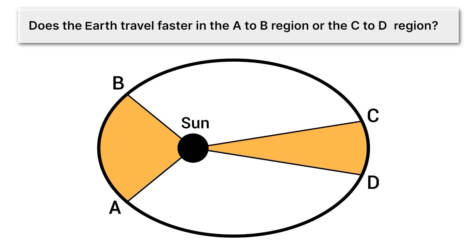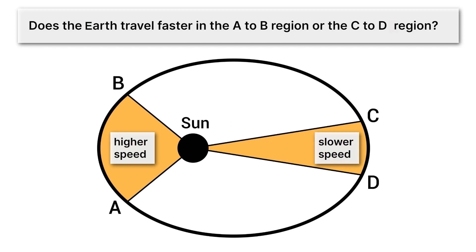Here's the question: does the Earth travel faster in the A to B region or the C to D region? You can see pretty clearly that the distance traveled from A to B is longer. If you travel a farther distance in the same amount of time, you must be moving at a higher speed. Meanwhile, in the C to D region, you're traveling a shorter distance in those same 50 days, so that must be a slower speed. As an object like the Earth orbits something else, it'll sometimes move faster and sometimes slower.